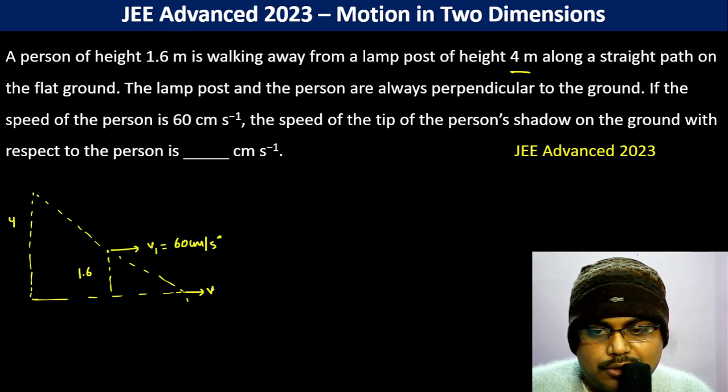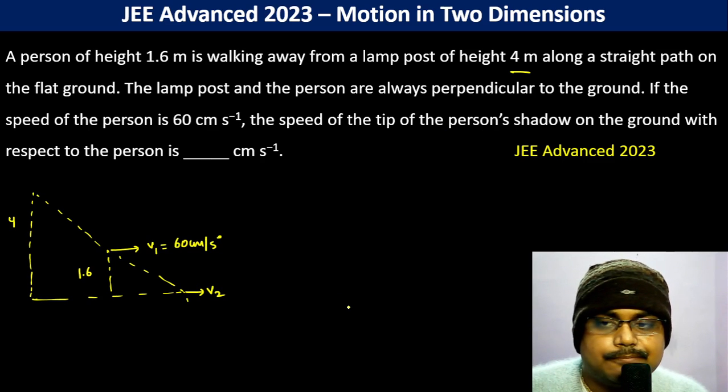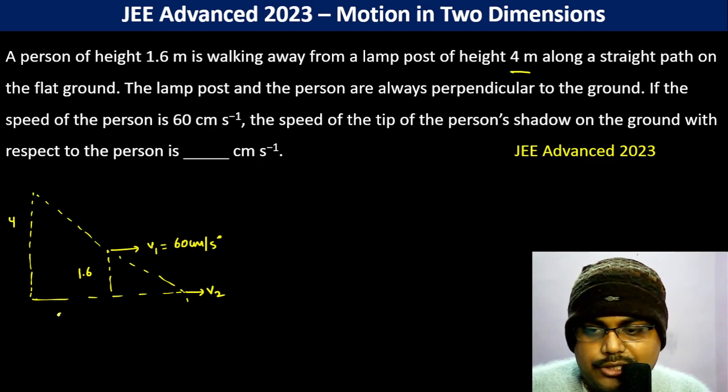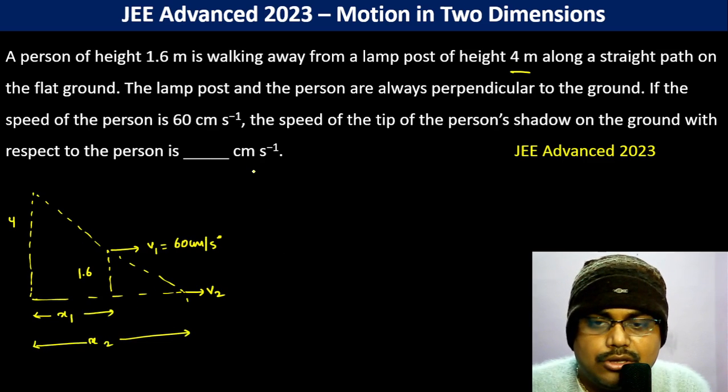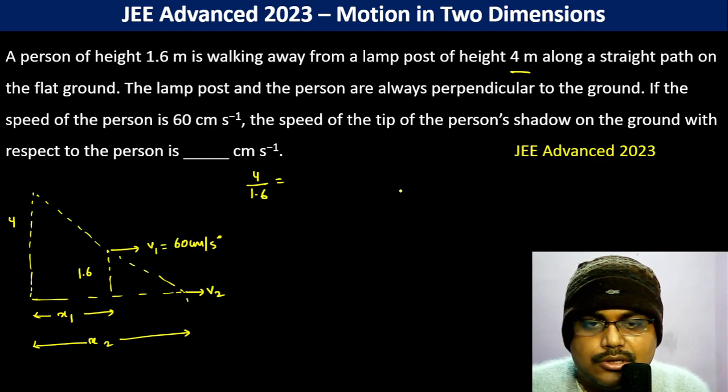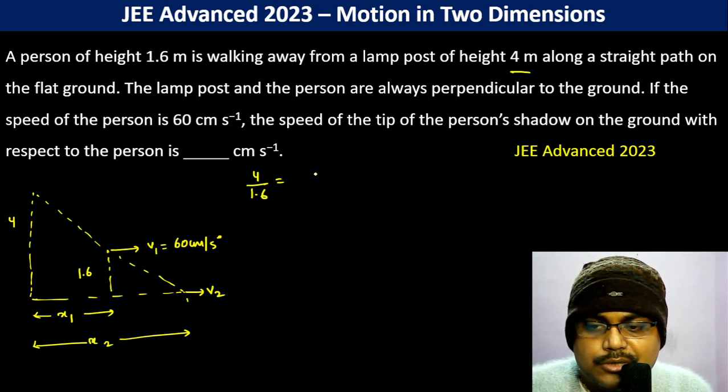The speed of the tip of the person's shadow - what is going to be v2? So let this be x1 here and let this be x2. If you see by similarity of triangles, 4 by 1.6 becomes x2 divided by x2 minus x1.